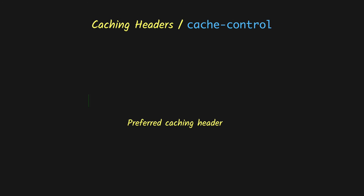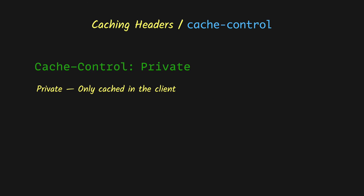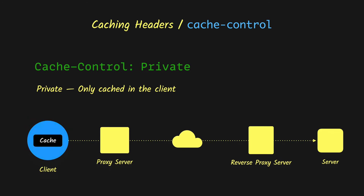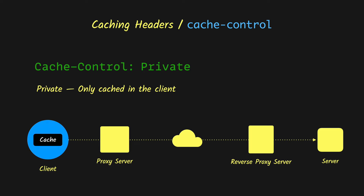Finally, in the caching headers we have the Cache-Control header, which is the preferred caching header introduced in HTTP 1.1. It is a multi-value header, so it can have multiple values or directives that determine the caching behavior. First we have the private directive — if the cache is set to private it means the content is private to the user and will only be cached in the client or browser.